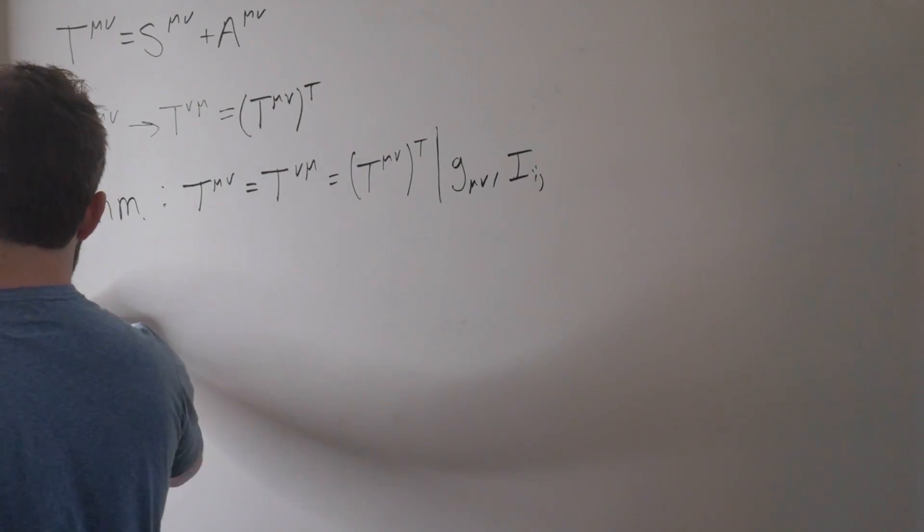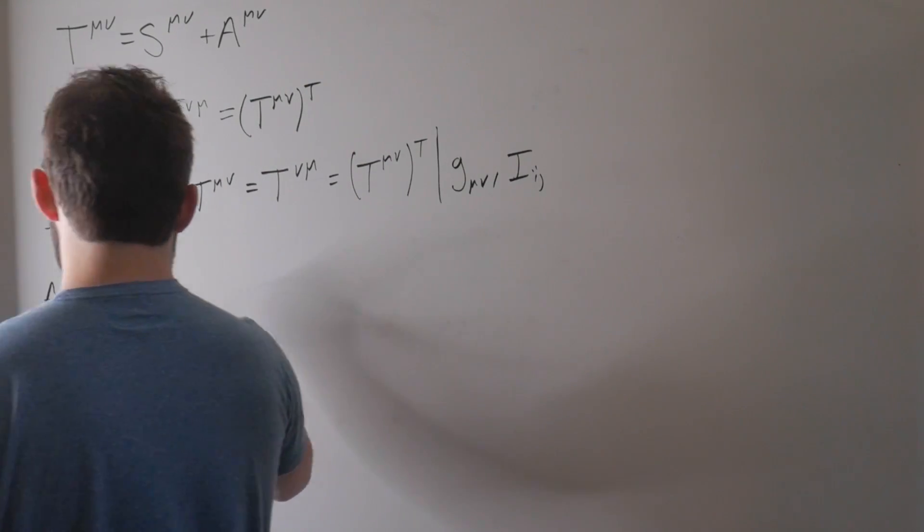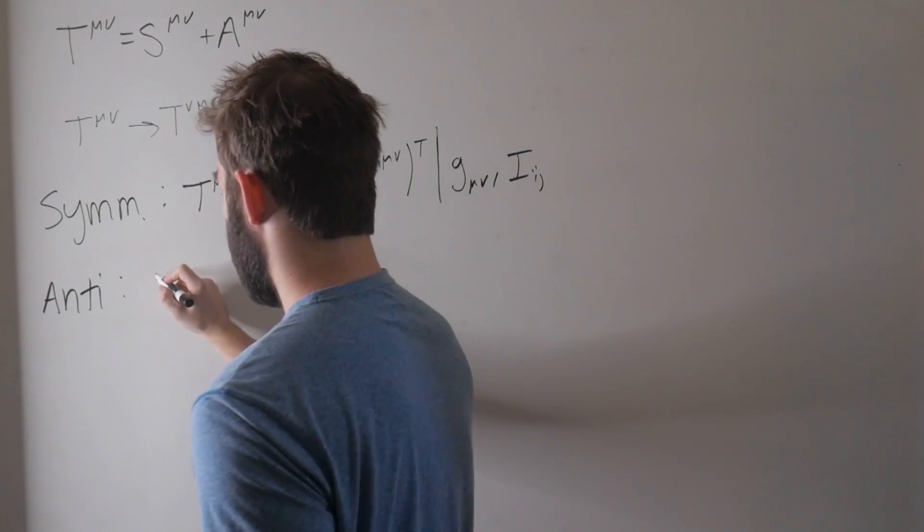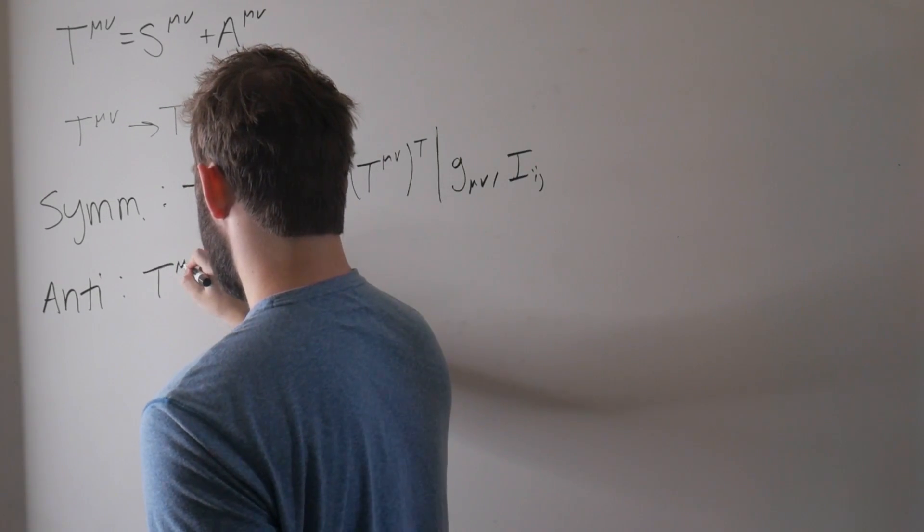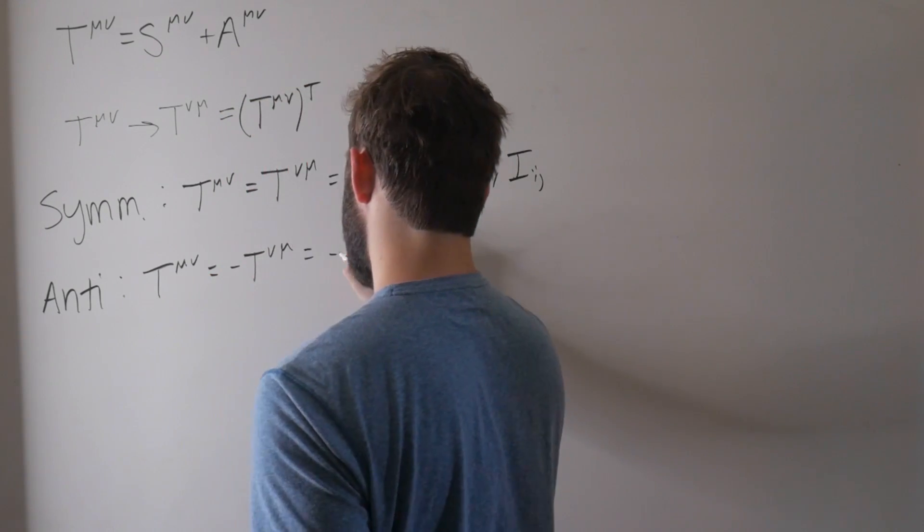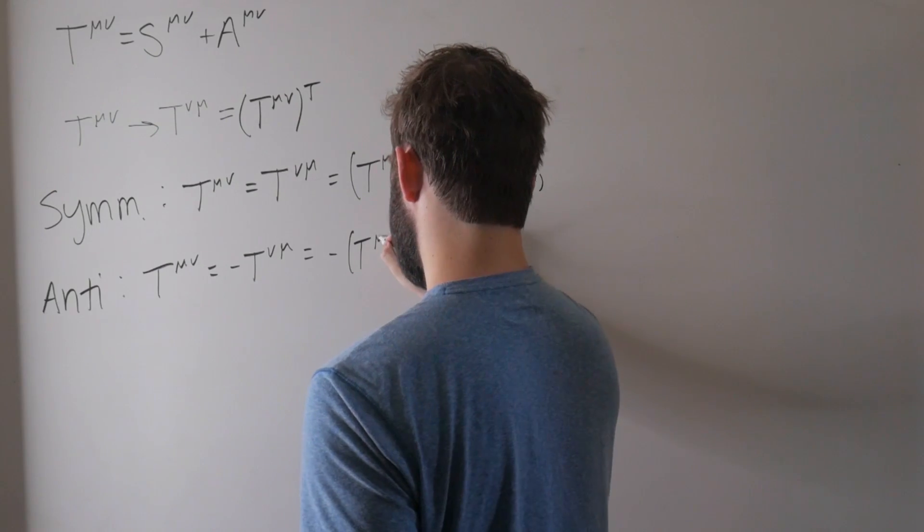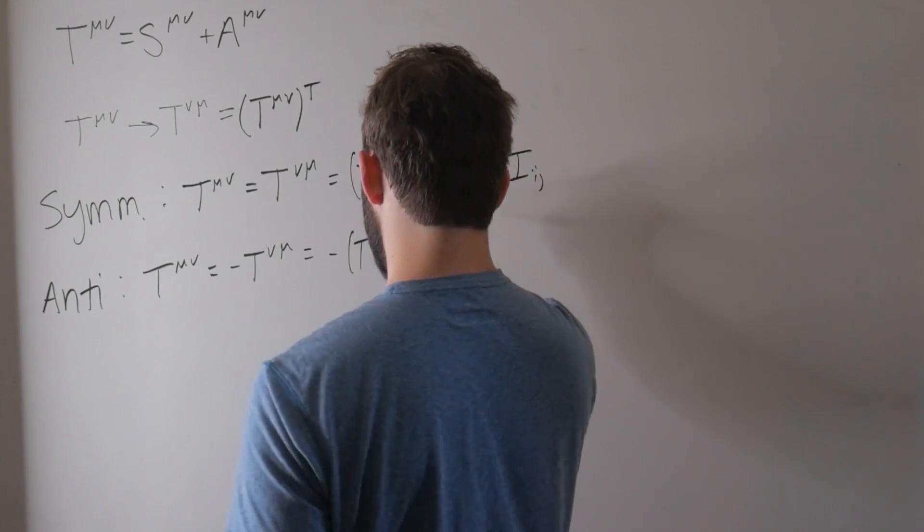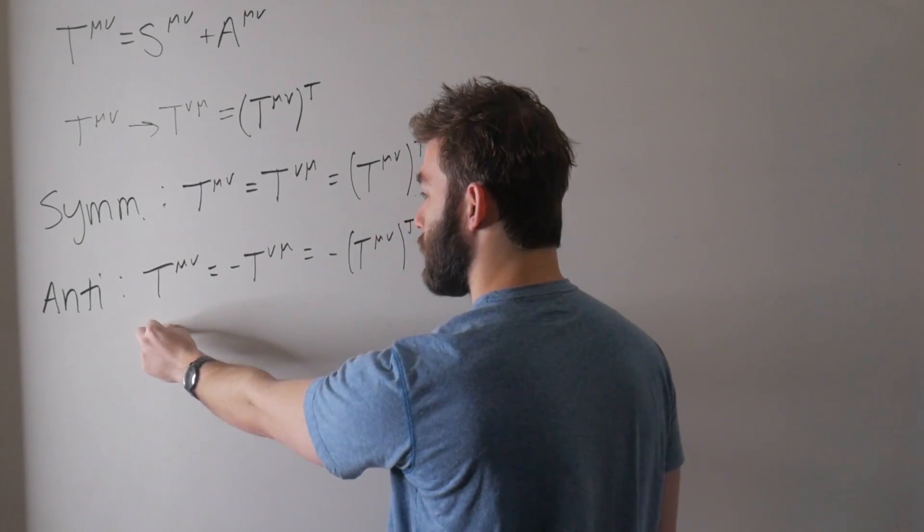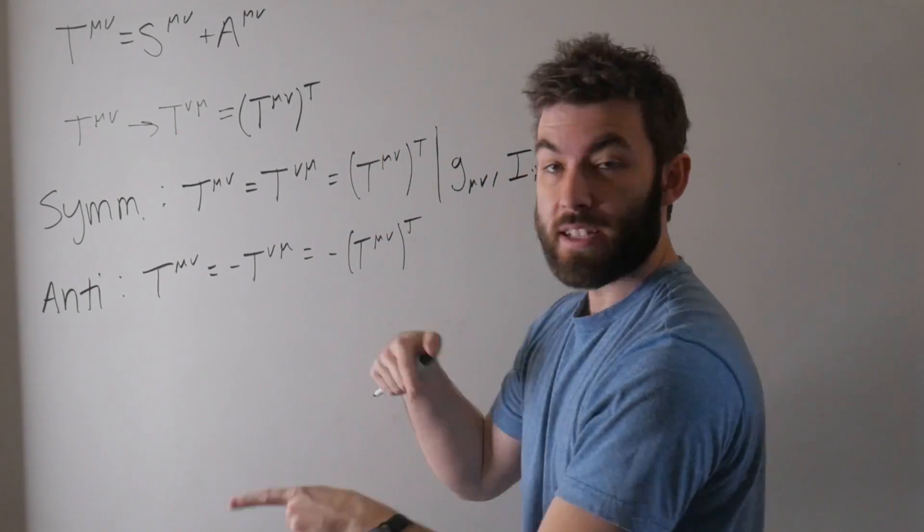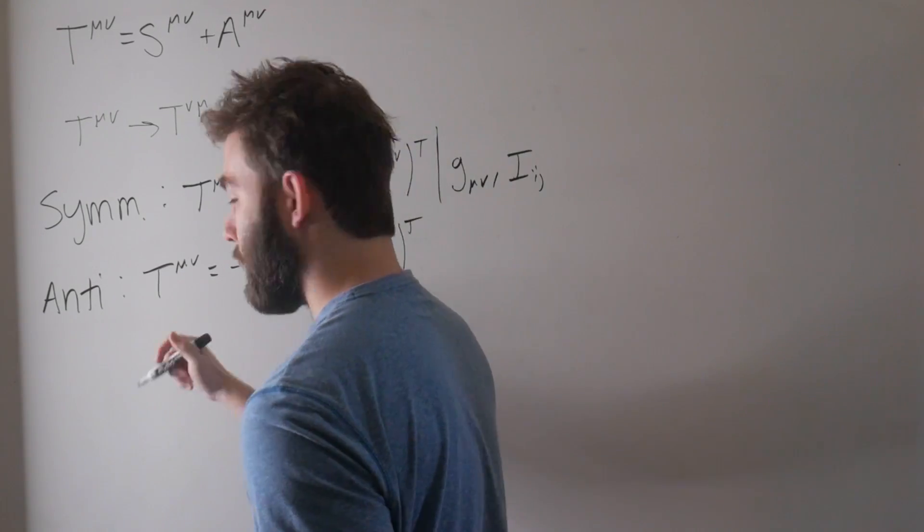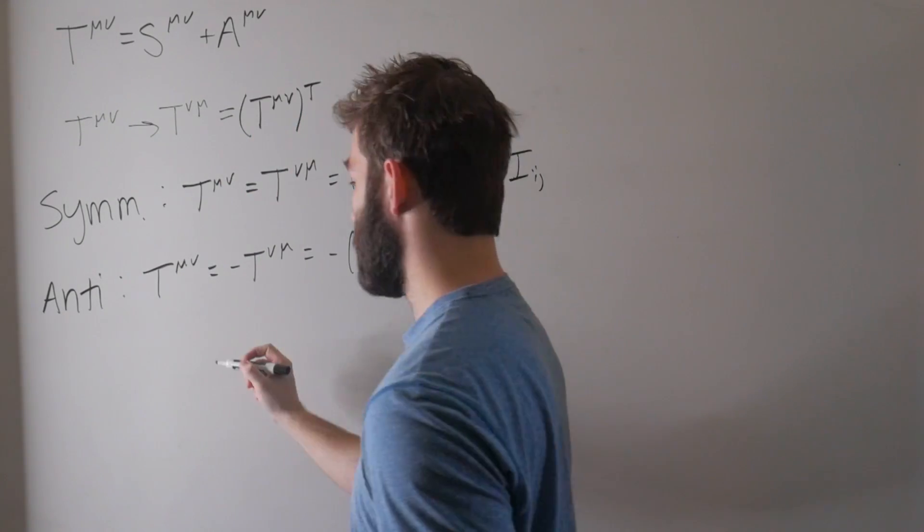Now for an antisymmetric tensor, we get a negative sign. We get a relative negative sign when we take this transpose. So that's saying that T^μν is equal to minus T^νμ, which is equal to minus T^μν transpose. And this one's a little bit more interesting to me because if we're saying that the matrix element is equal to the negative of the transpose of the matrix element, well, we get an interesting consequence if we let those be diagonal terms, if we set μ equal to ν.